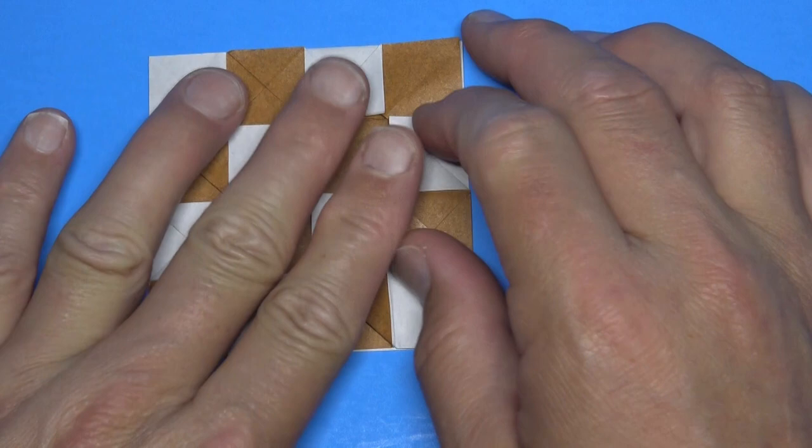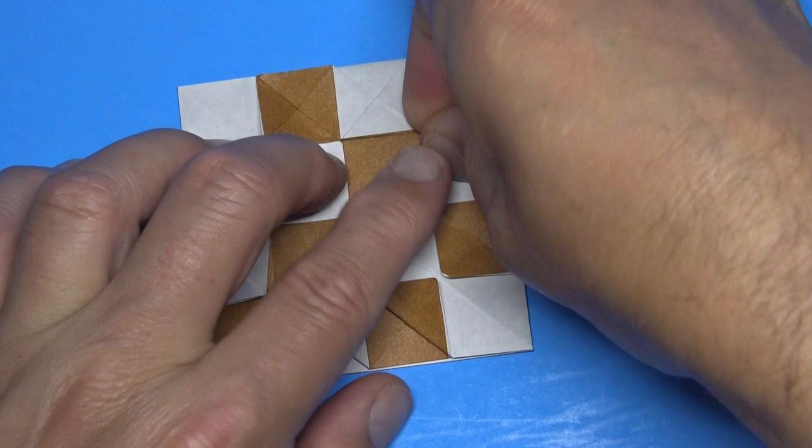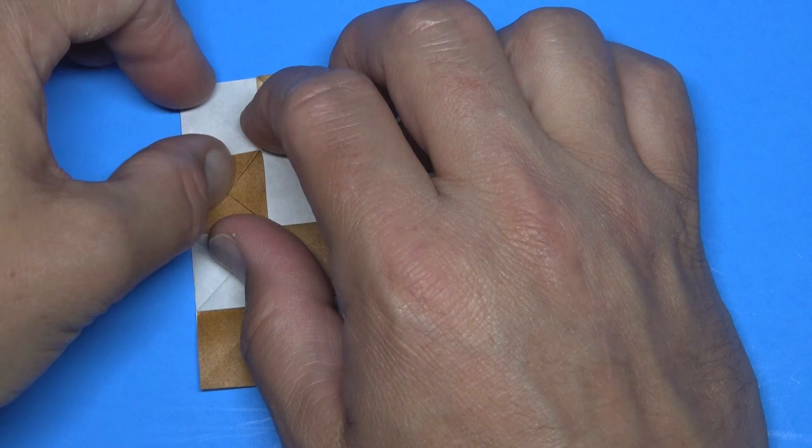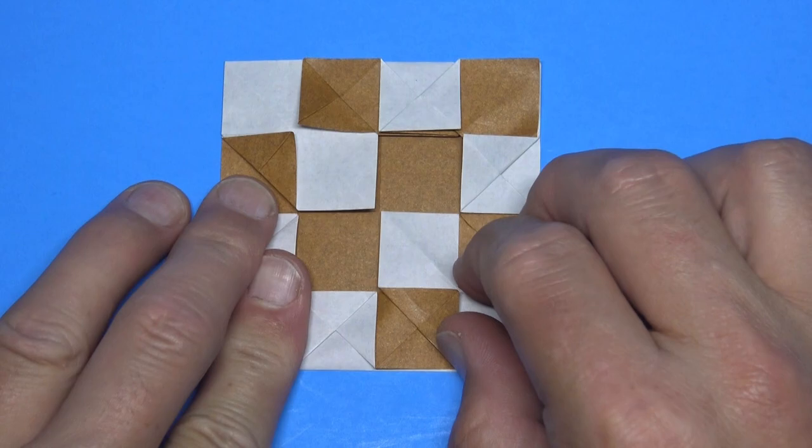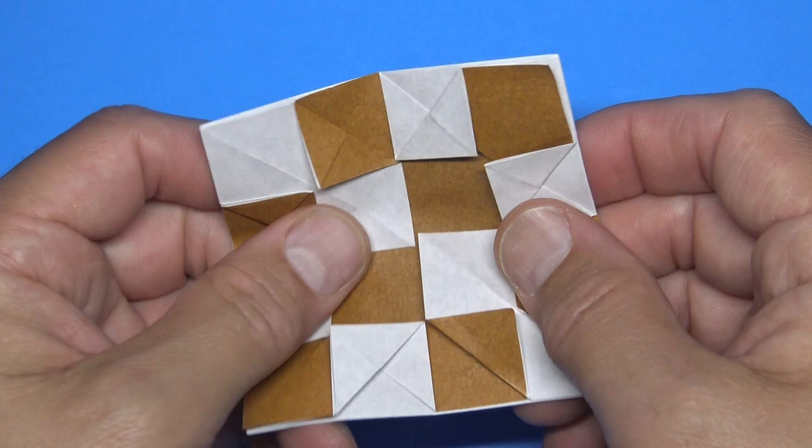And flatten it all really nicely. If you really want it to lie flat, I recommend putting it under a stack of books or something heavy and then leave it overnight so that it'll really flatten and make a nice flicker. Alright, let's see how this flies.